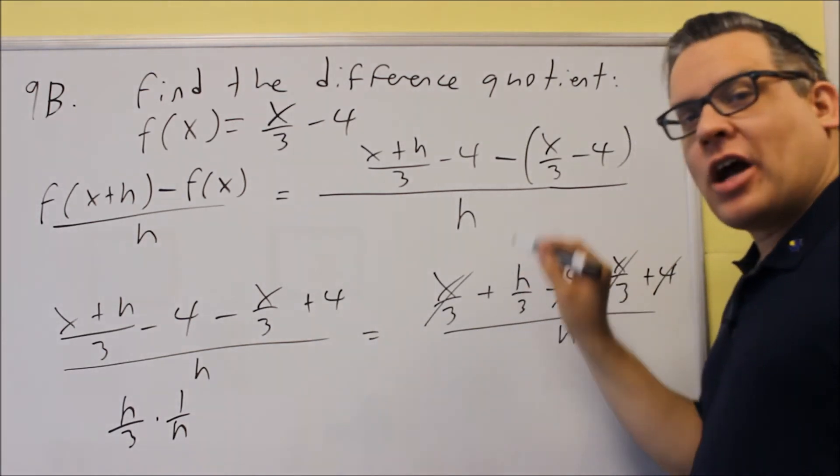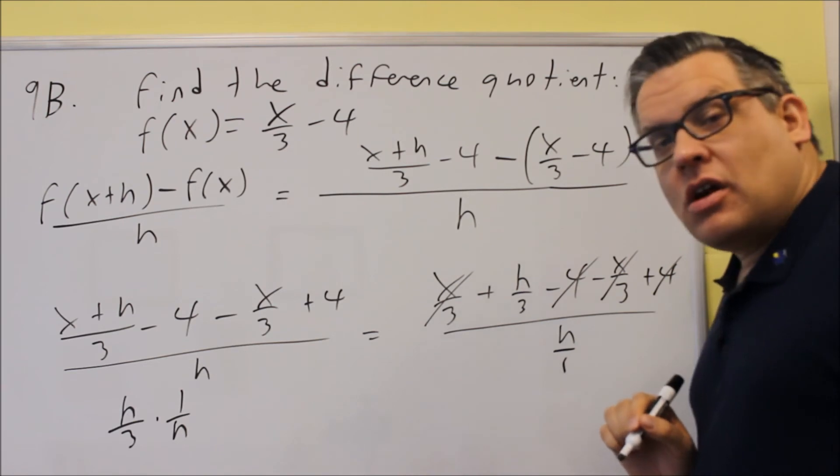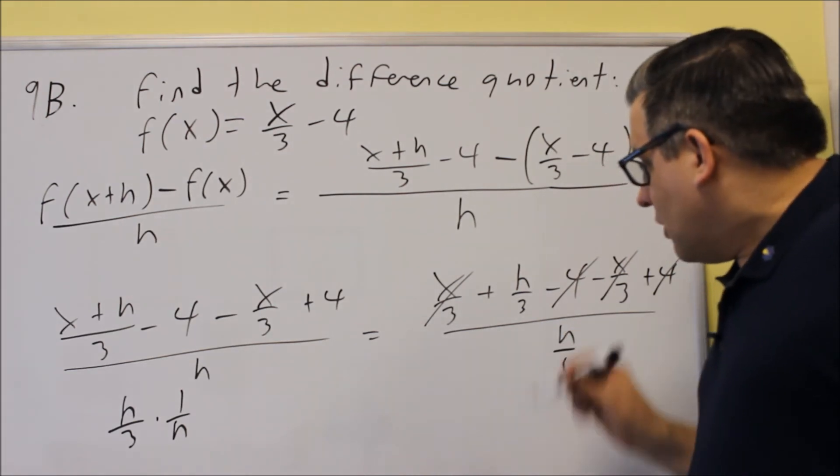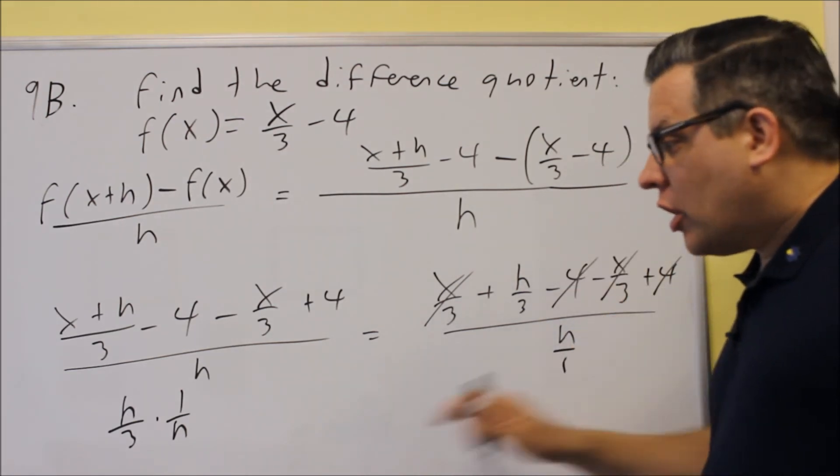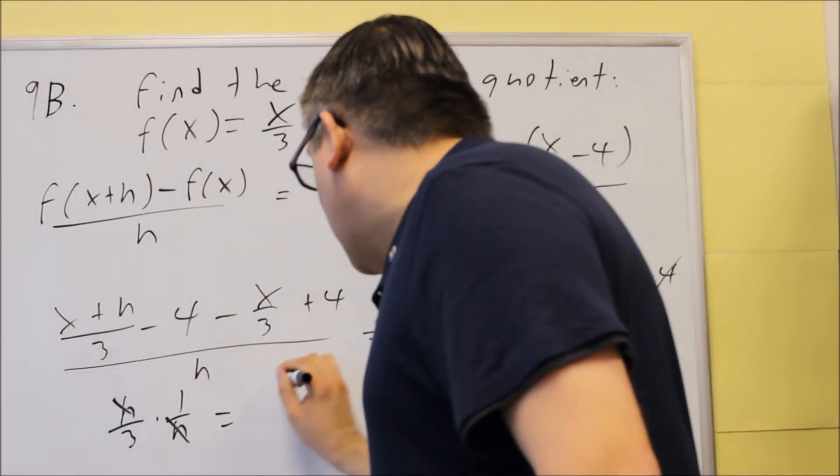So, I'm going to take the top fraction, multiply it by the reciprocal of the bottom one, which again, I can write that as h over 1 if I wanted to. So, h over 3 divided by h over 1 is going to turn into this. The h's are going to cancel out.